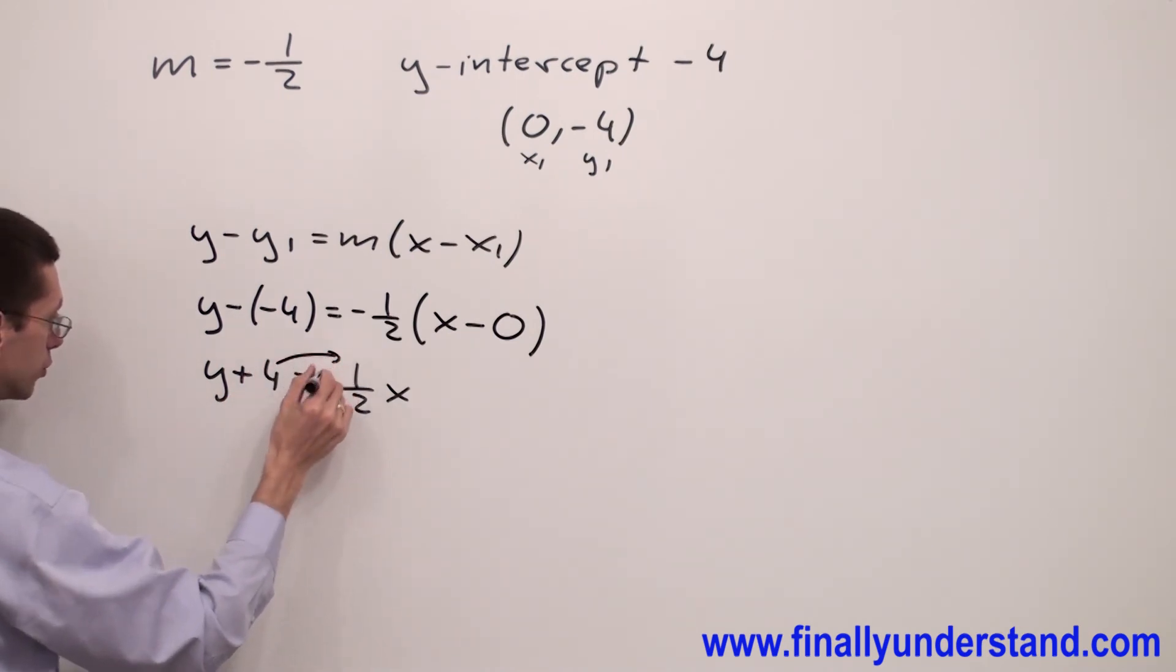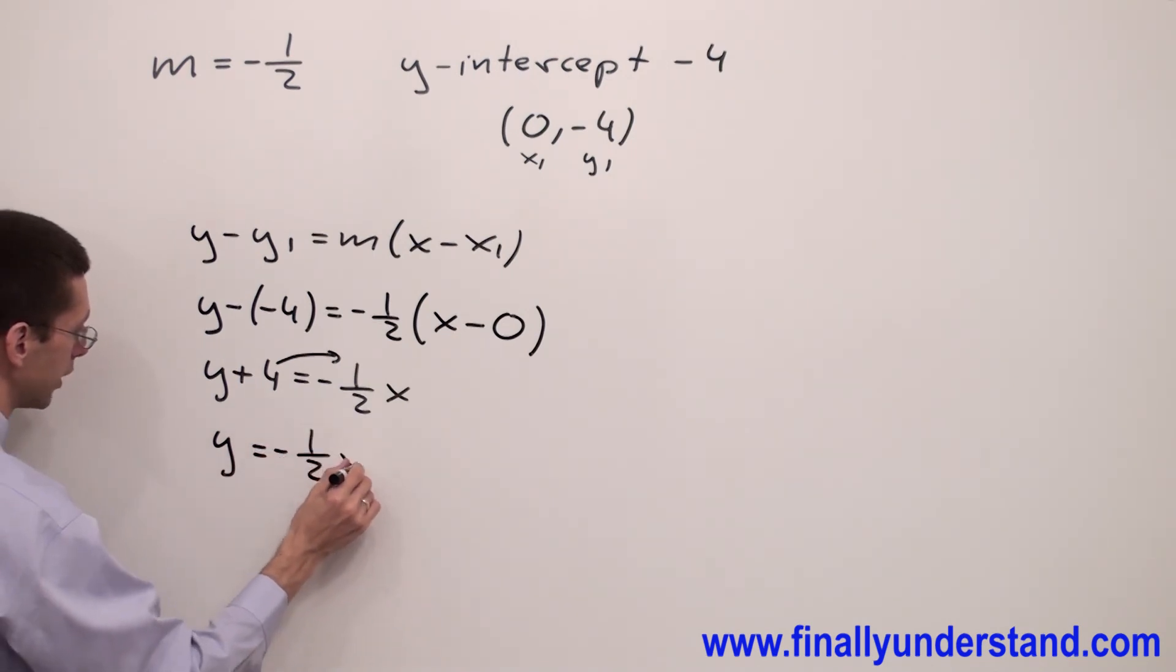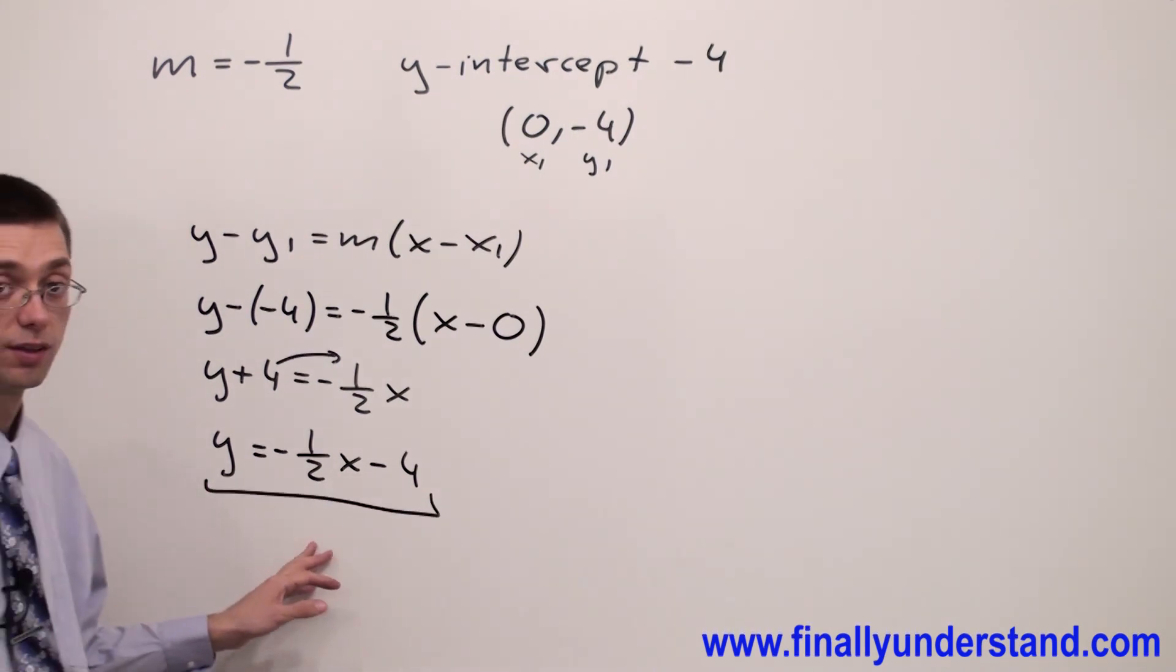I have to move four to the right side. Y is equal negative one half x minus four. And this is the solution to my problem.